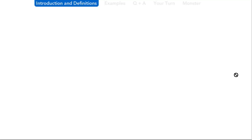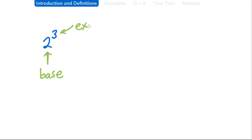When we're dealing with exponents, we always have a base and then a power. For example, in this number right here, let's start with 2 to the third power. In this case, our base would be the 2, and the 3 would be the exponent itself, which is also called a power. You could say 2 to the power 3, or you could say 2 with exponent 3.